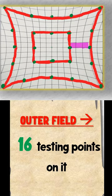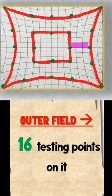This outer field actually has about 16 points located on it for the test.